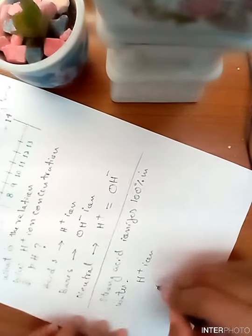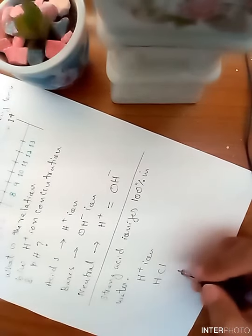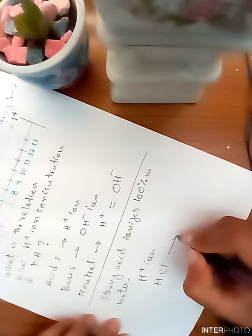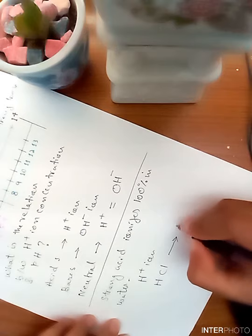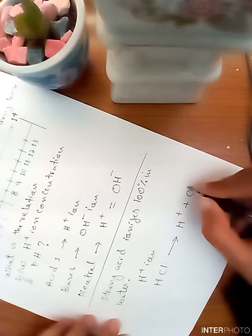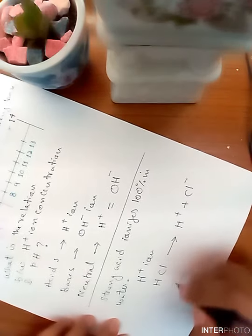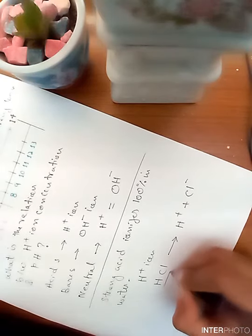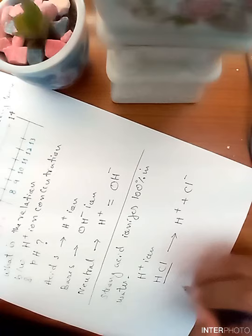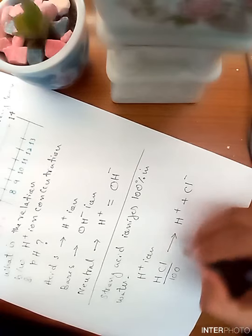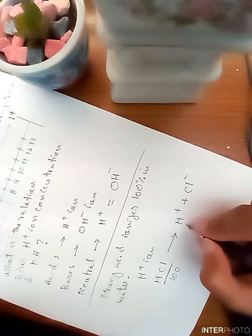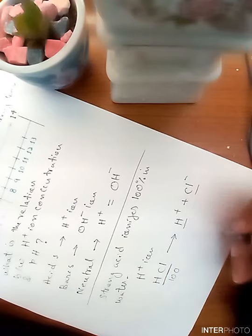Because, for example, hydrochloric acid, which is a strong acid when it is dissolved in water, it produces H-positive ions and Cl-negative ions. So, if there are maximum HCl molecules, for suppose, let's say 100, then all the 100 molecules will dissociate or ionize into H-positive and Cl-negative.